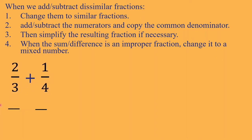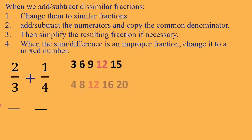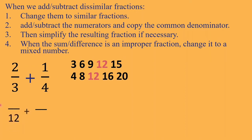Example: 2 thirds plus 1 fourth. The denominators are different, so these are dissimilar fractions. We need to find the LCD. To find the LCD, we list the multiples of the denominators 3 and 4. Multiples of 3: 3, 6, 9, 12, 15. Multiples of 4: 4, 8, 12, 16, 20. We look for the least common multiple, and that is 12. So 12 will be our new common denominator.